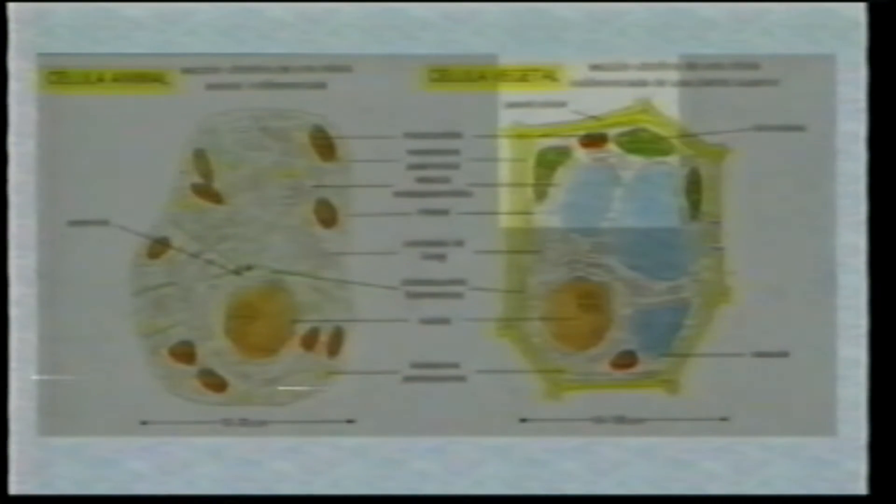Independientemente del tipo de células, todas pasan por un ciclo llamado ciclo celular, que es el equivalente al ciclo de vida de los organismos. De las células eucariontes, ¿podrías mencionar qué organismos las poseen? Las células eucariontes son las más conocidas. Un ejemplo serían las células de protistas, que sería el paramecium, que es la siguiente imagen.